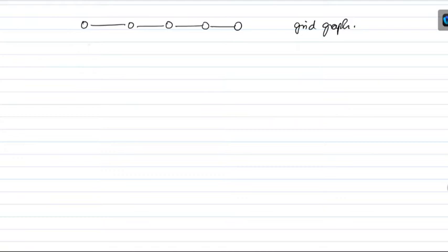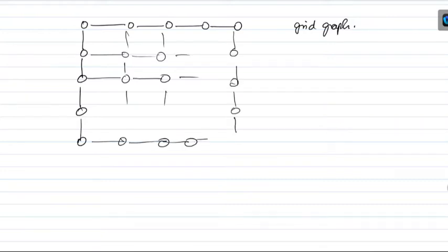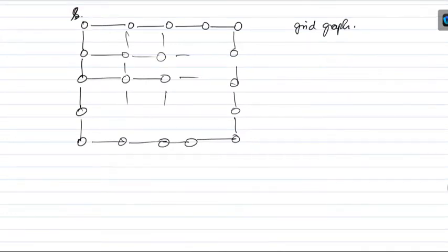Let's look at a grid graph — it's just a mesh. So this is the grid graph. Suppose this is the source. Now, how does the algorithm proceed? What's going to happen in the first iteration? The source — this is kind of the 0th iteration. You insert the source into the priority queue in the beginning.